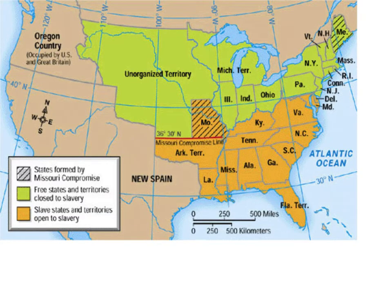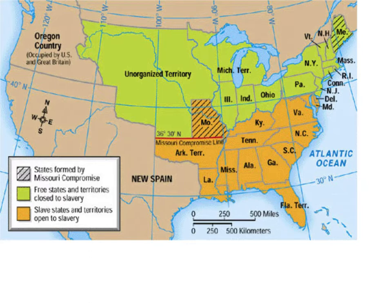The first thing we need to consider is what changed — what happens from the beginning of American history to 1860 that leads this conflict to cause an open war between the North and the South. In order to do that, we need to look back at something that happened before 1830. Let's take a look at something that happened in 1820. Back in 1820, we had a conflict between the Northern states and the Southern states.